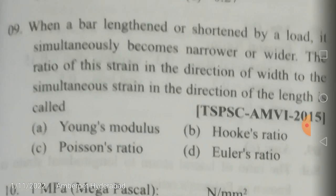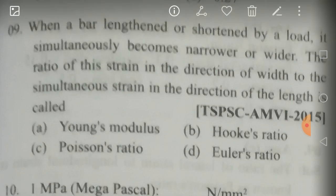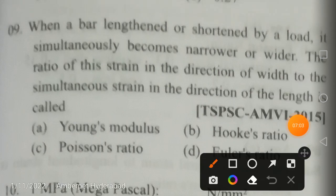When a bar is lengthened or shortened by load, it simultaneously becomes narrower or wider. The ratio of the strain in the direction of width to the simultaneous strain in the direction of stress (length) is called Poisson's ratio. It is the ratio of lateral strain to longitudinal strain — not Young's modulus, Hook's ratio, or Euler's ratio.